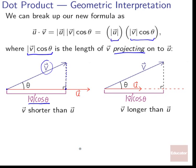Since we drop a perpendicular, we have a right angle, so it's basic trigonometry: cosine of theta times the length of the hypotenuse (|v|) gives the length of that projection. This also works when v is longer than u — we think of u continuing forever, drop a perpendicular from v onto that continuation, and that gives us the projection. So the dot product is the length of one vector multiplied by the length of the other vector's projection onto it.